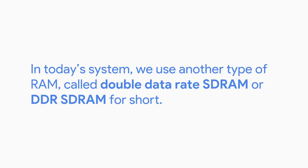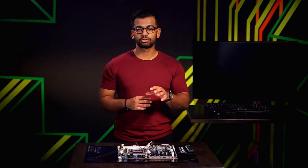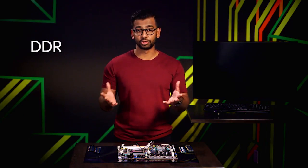After DRAM was created, RAM manufacturers built something called SDRAM, which stands for Synchronous DRAM. This type of RAM is synchronized to our system's clock speed, allowing quicker processing of data. In today's systems, we use another type of RAM called Double Data Rate SDRAM, or DDR SDRAM for short. Most people refer to this RAM as DDR, even shorter.